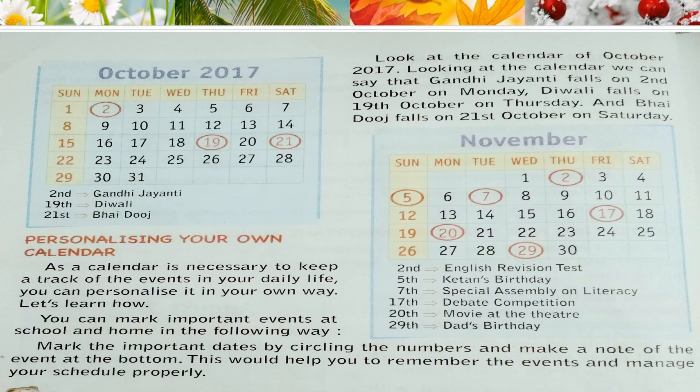Students, look at the calendar of October 2017 on your screen. We can see that Gandhi Jayanti falls on 2nd October on Monday. Diwali falls on 19th October on Thursday. And Bhai Duj falls on 21st October on Saturday.